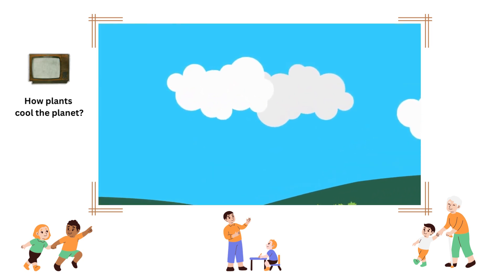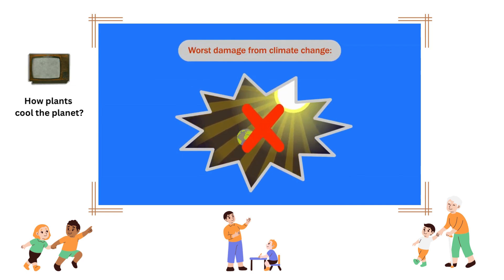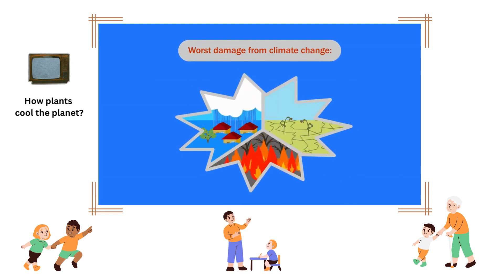Another important feature of clouds is that they make rain. The worst damage from climate change comes not from heat per se, but from floods, droughts, fires, and irregular rainfall.